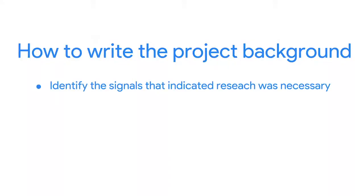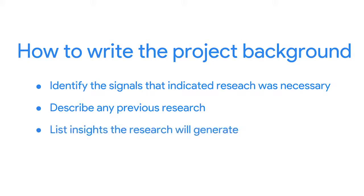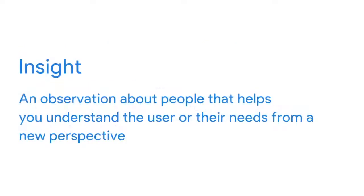Keep three things in mind as you write the project background. First, identify the signals that indicated research was necessary — ask yourself why you're doing this research and if there's a problem you're trying to solve. Second, describe any previous research that has been conducted or solutions that have been tried. Third, list insights the research will generate. An insight is an observation about people that helps you understand the user or their needs from a new perspective. Include how the insights will be used and what decisions will be made based on those insights. Keep the project background concise so that everyone on your team will read it.